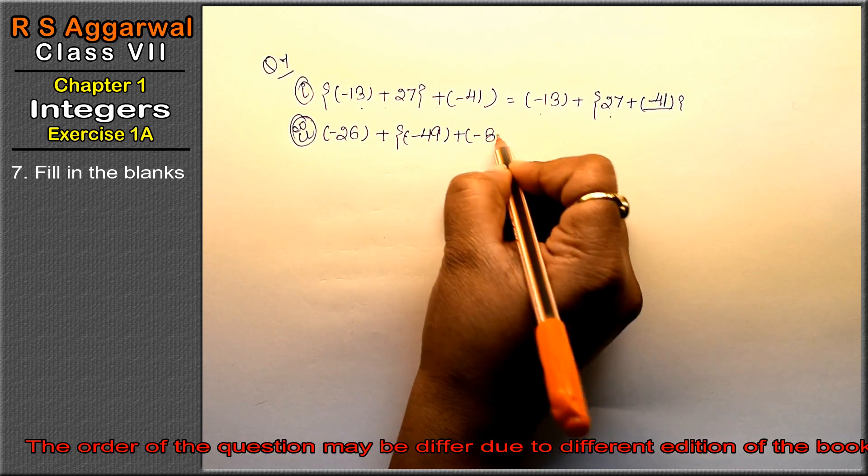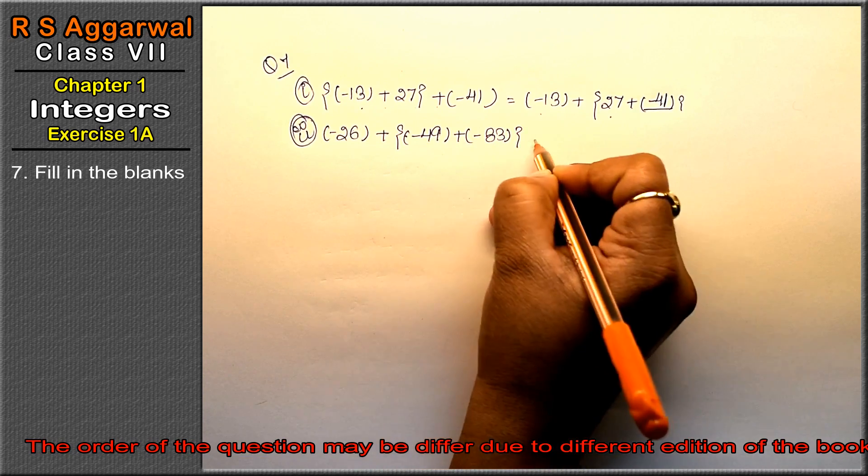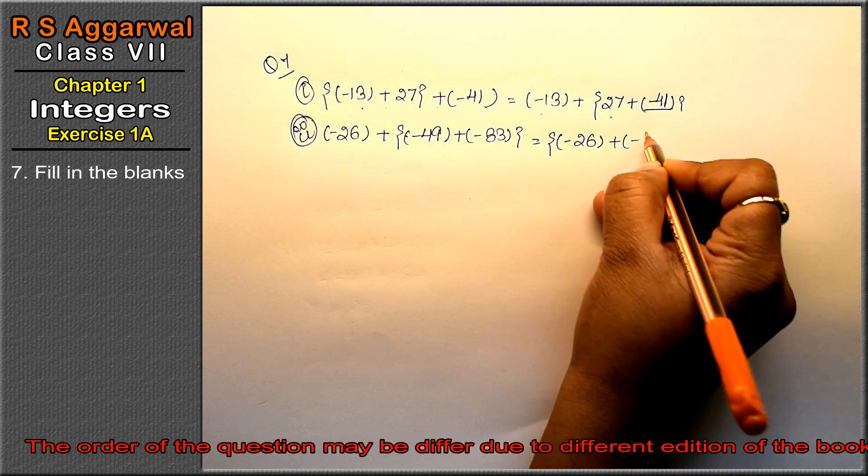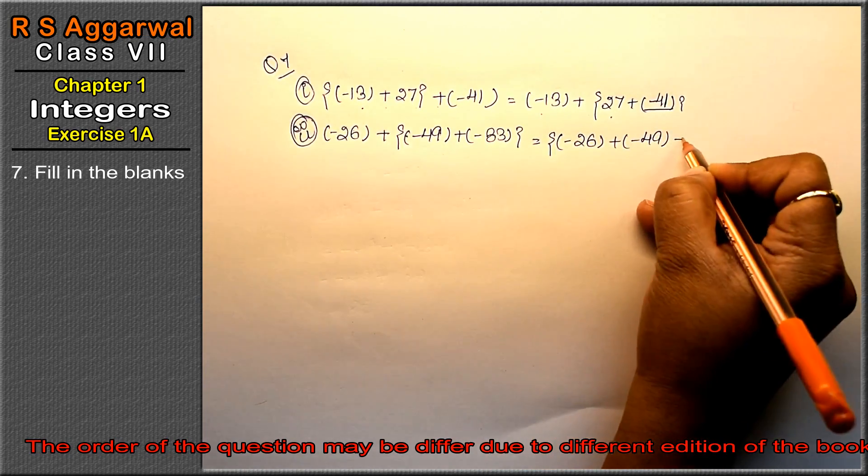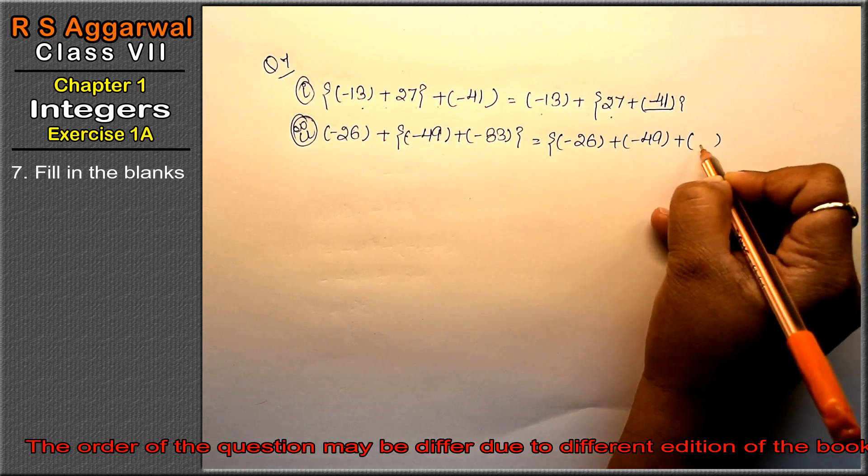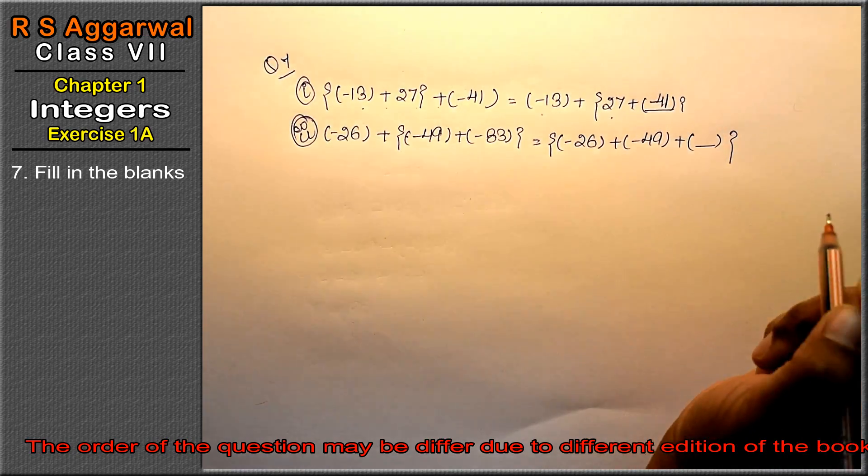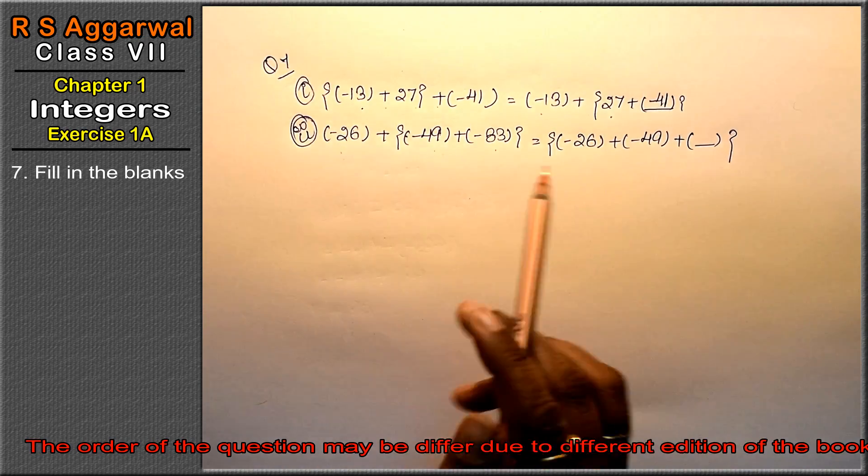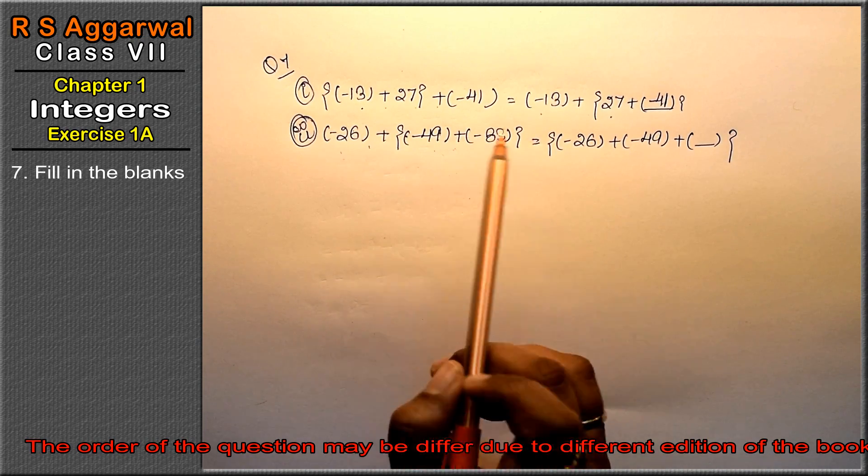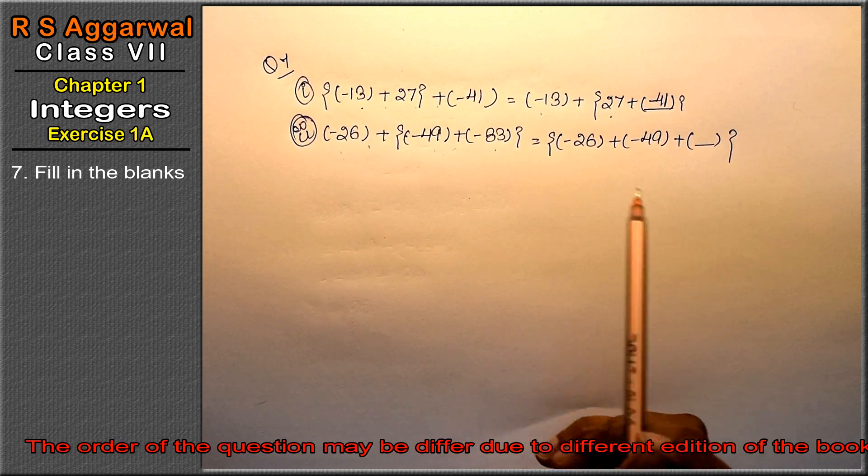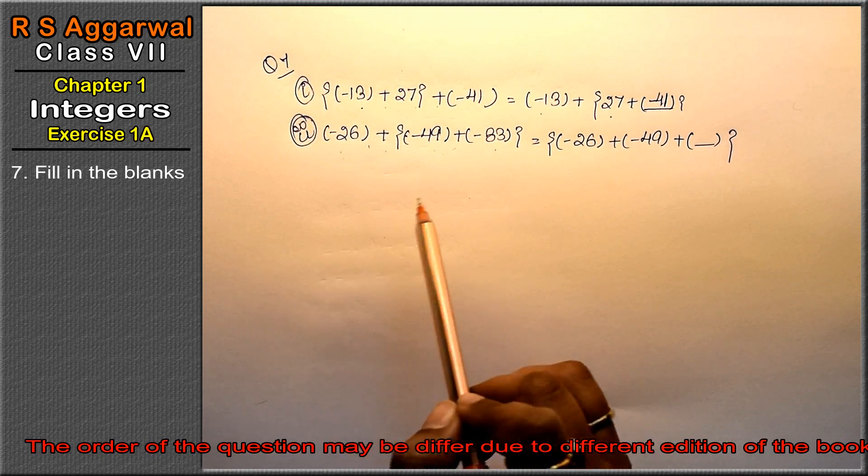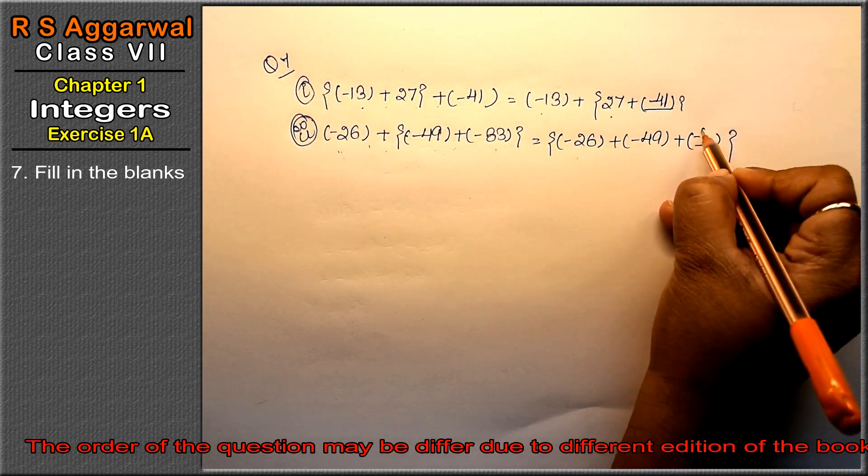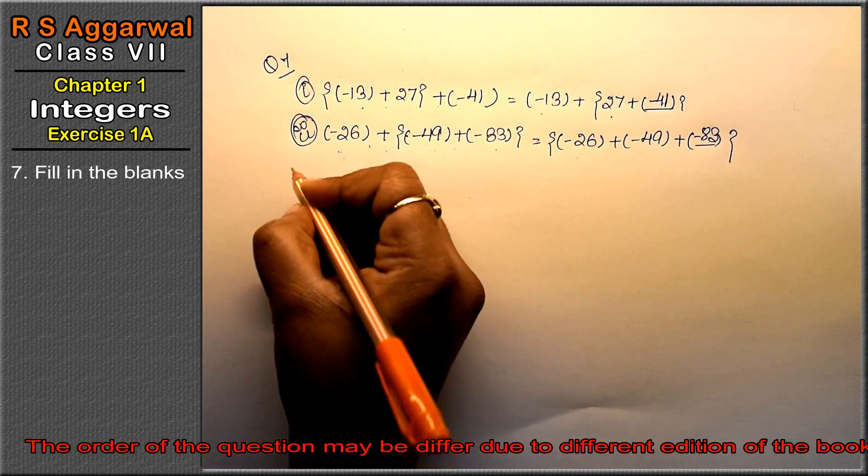Second part: minus 26 plus minus 49 plus minus 83 bracket equals minus 26 plus minus 49 plus bracket dash. See, there are three things here: minus 26 is there, addition is in between. If it was multiplication, our property would apply, but this is addition. Minus 26 is there, minus 49 is there, but minus 83 is not there. That means minus 83 is the answer.